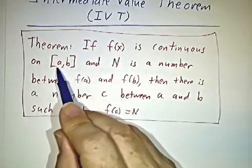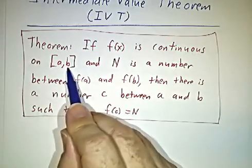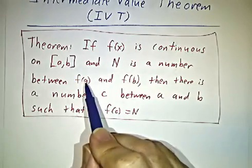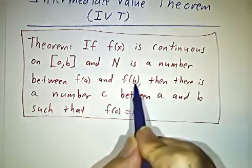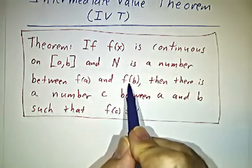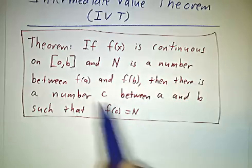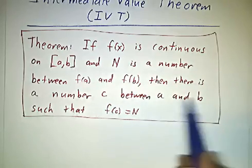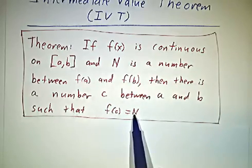You have a function f that's continuous on an interval, and then you're interested in the value of f at each end, so f(a) and f(b), and you have a number somewhere in between f(a) and f(b). Then I claim that there's a number c between a and b, so that f(c) equals n.